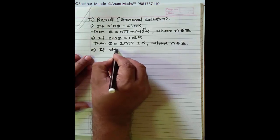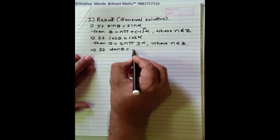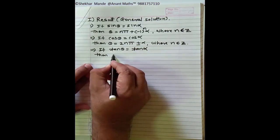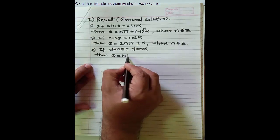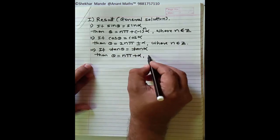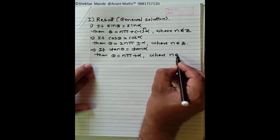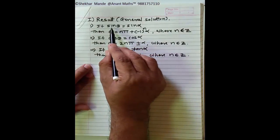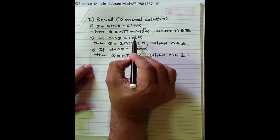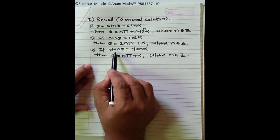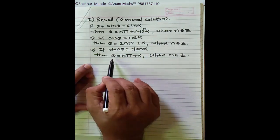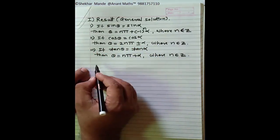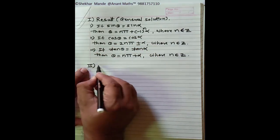If tan θ = tan α, then θ = nπ + α, where n belongs to Z. So we have three results: sin θ = sin α, cos θ = cos α, and tan θ = tan α giving θ = nπ + α.